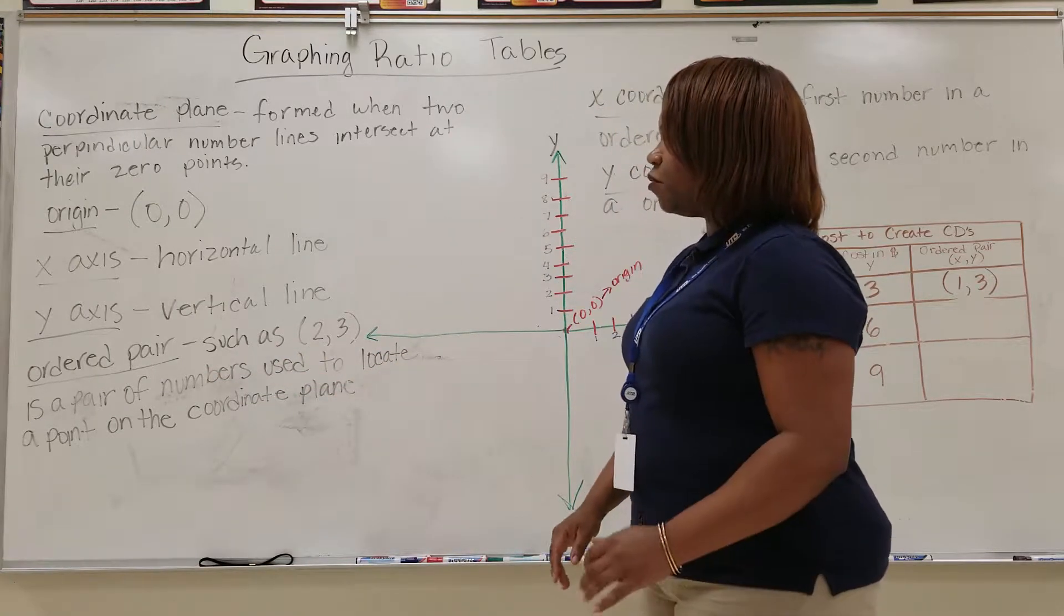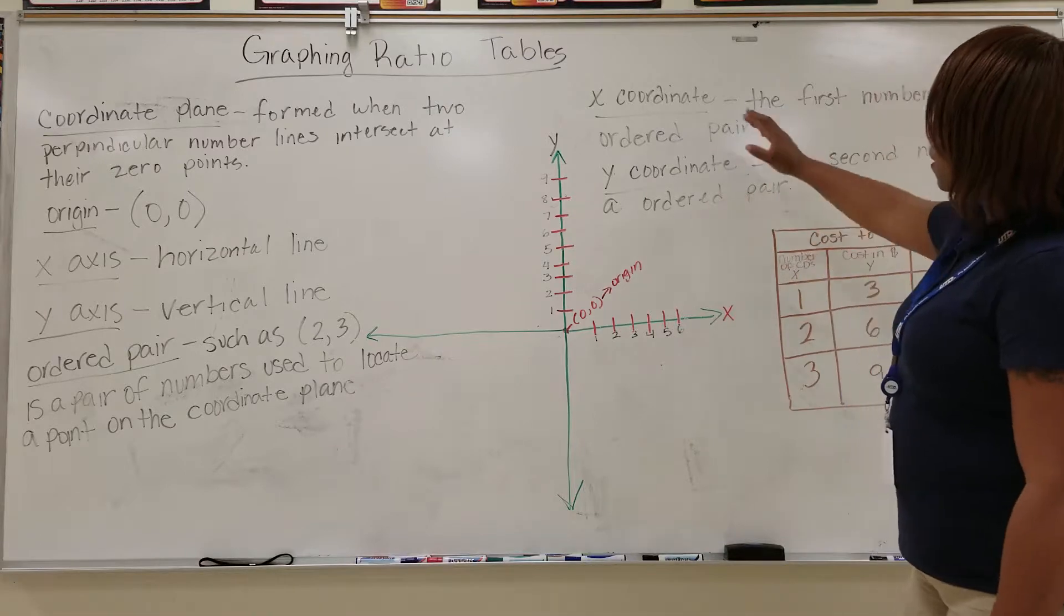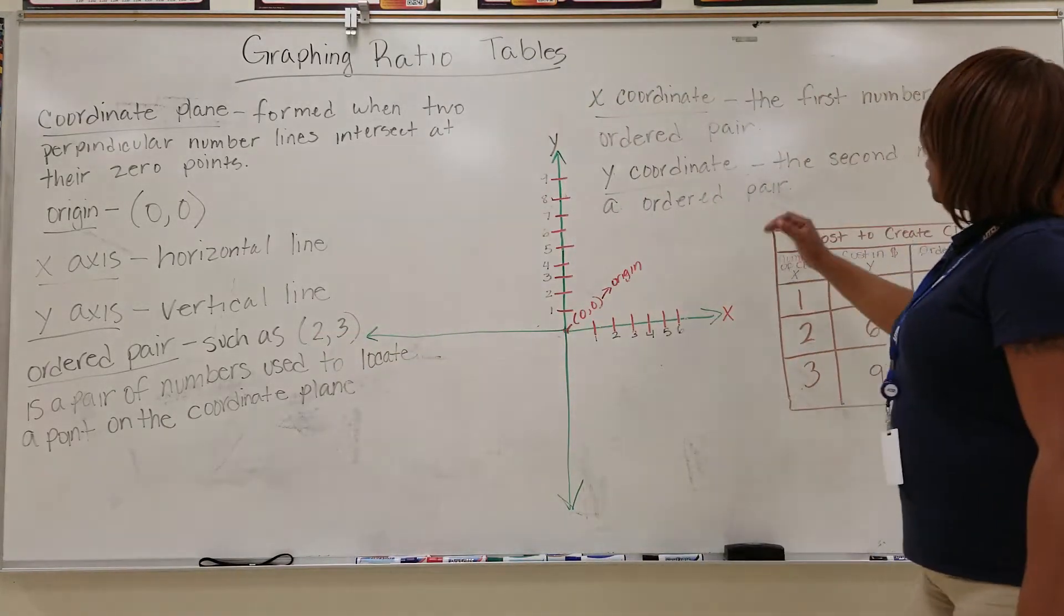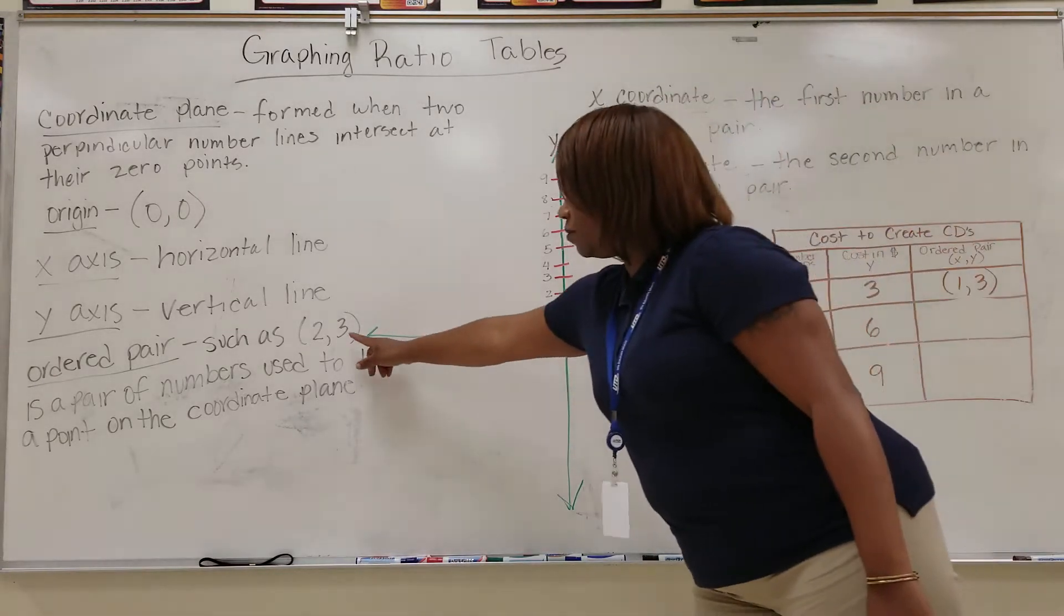The x-coordinate, in this case the two, is the first number in the ordered pair. The y-coordinate, which is the three, is the second number in the ordered pair.